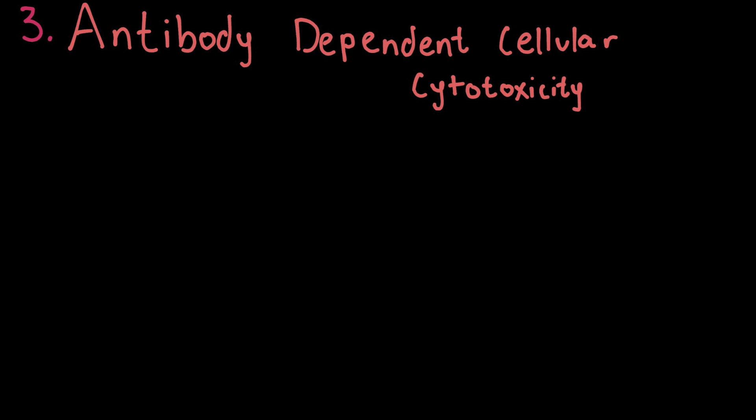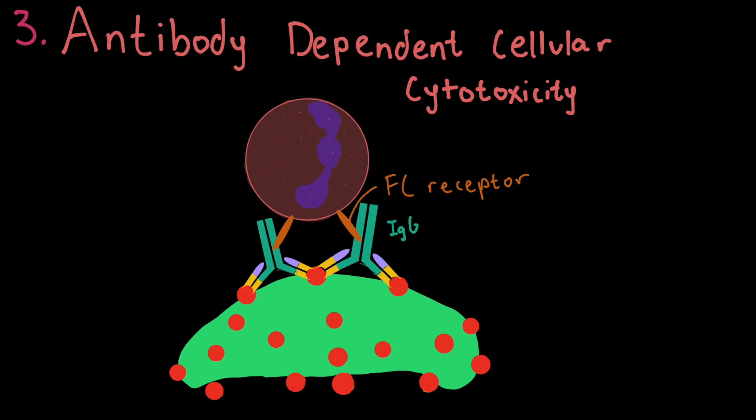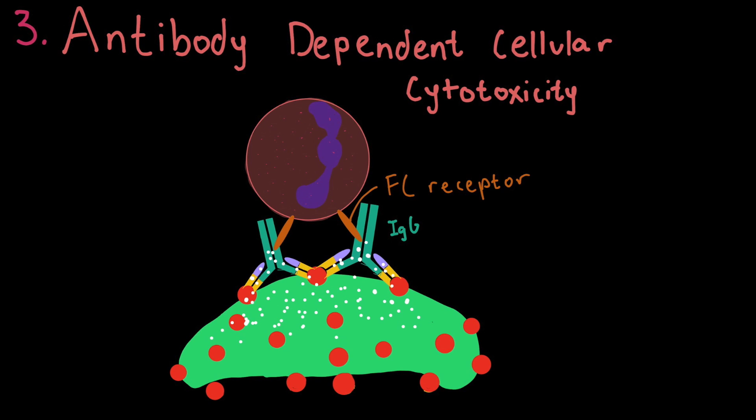The third mechanism includes antibody-dependent cellular cytotoxicity or ADCC for short. This mechanism is activated when FC receptors of leukocytes such as natural killer cells bind to the IgG antibodies which are attached to the pathogen's antigens. The natural killer cells will then send cytotoxic signals towards the pathogen ultimately killing them.